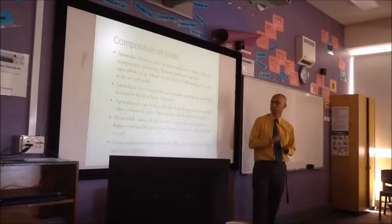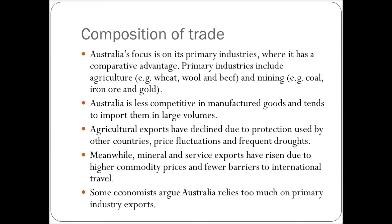Australia's focus is on its primary industries where it has a comparative advantage. Primary industries include agricultural products — wheat, wool, beef — and mining: coal, iron, and gold. Australia is less competitive in manufacturing goods and tends to import them in high quality. Agricultural exports have declined due to protection used by other countries, price fluctuations, and frequent droughts. Meanwhile, mineral and service exports have grown due to high commodity prices and the value of international travel.